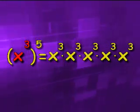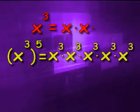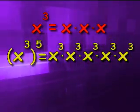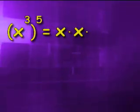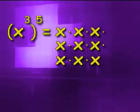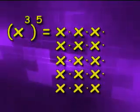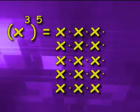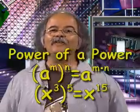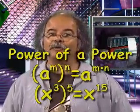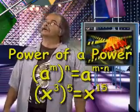But since x to the third really means x times x times x, then altogether we have x multiplied by itself fifteen times, which is x to the fifteenth. So when we raise a power to another power, we multiply the exponents. It's the law.